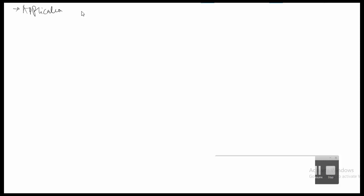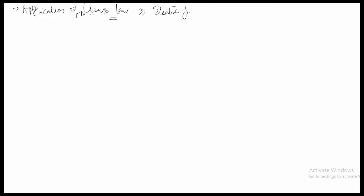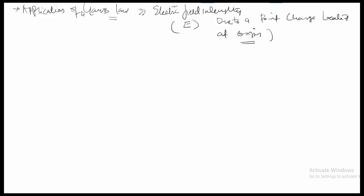This is the next video, and this video is about the application of Gauss's Law to find out the electric field intensity due to a point charge located at the origin at a point P. The equation of electric field intensity is equal to KQ divided by R squared in the direction of the vector R.